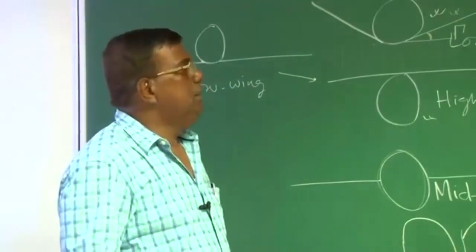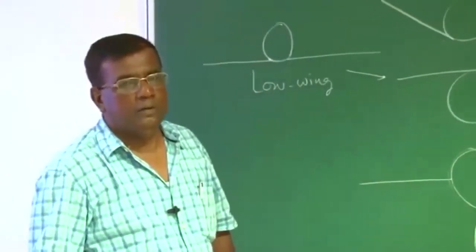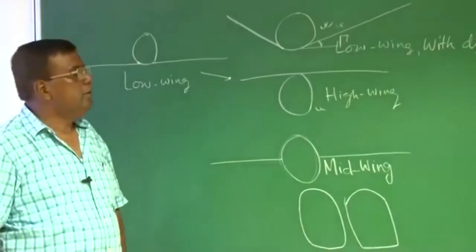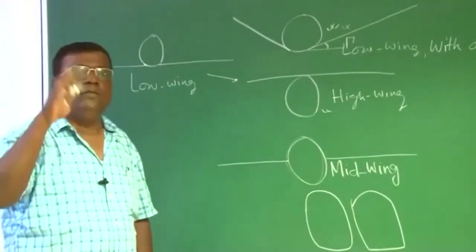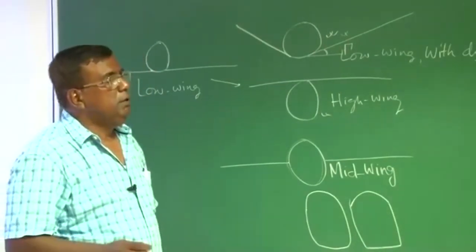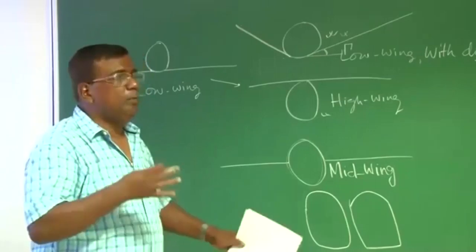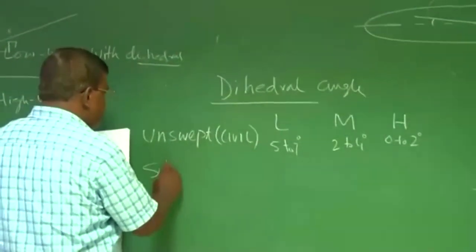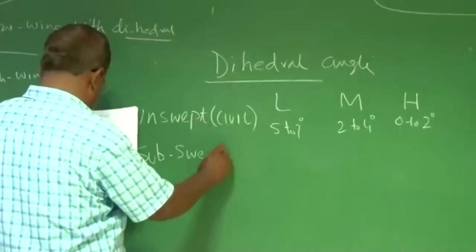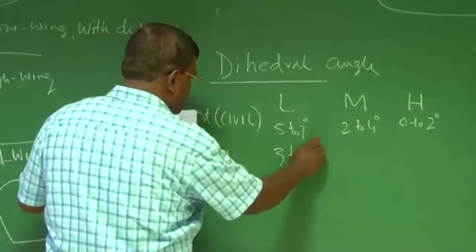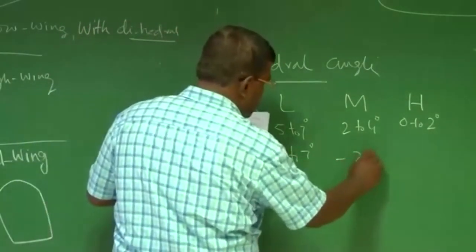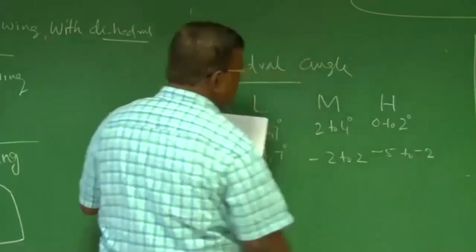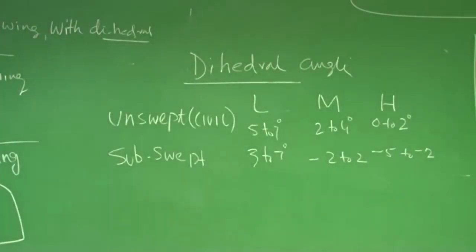In contrast, if you have a high wing, you have to ensure that it should not become over stable as far as lateral stability is concerned. But then, these are the combinations. We understand as a designer, lateral stability we can get from vertical tail also. So if this is already producing lot of lateral stability, then size of the vertical tail you can reduce. But when you reduce, it should not be at the cost of rudder power. Similarly, for subsonic swept, it is 3 to 7 degrees, minus 2 to 2 degrees.